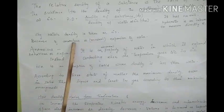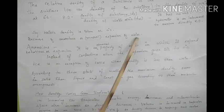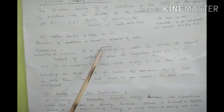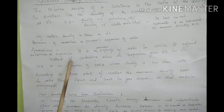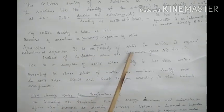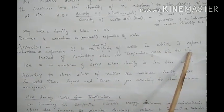Then what is anomalous or unusual expansion of water? It is an abnormal property of water in which it expands instead of contracting when the temperature goes from 4 degrees to 0 degrees.